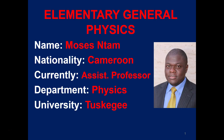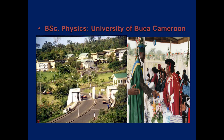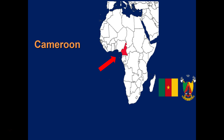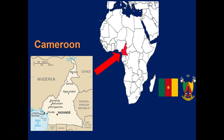My name is Moses Ntam, originally from Cameroon in West Africa, currently an assistant professor of physics at Tuskegee University. My educational journey began at the University of Boya in Cameroon, where I obtained a bachelor's degree in physics. This is where Cameroon is located in West Africa, and the map of Cameroon.